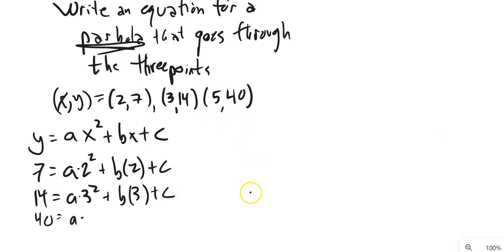And these are times 5 squared plus b times 5 plus c. And now, if I do a little bit of arithmetic here, like 2 squared is 4, right?